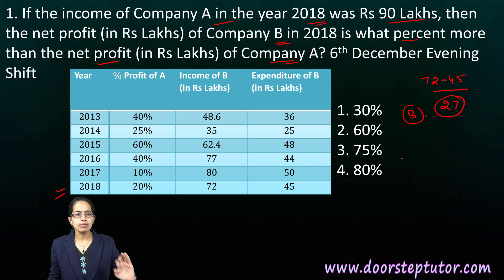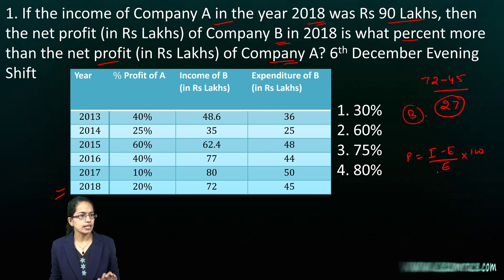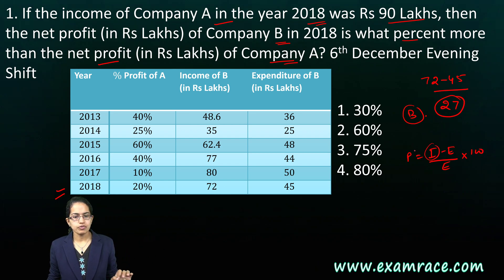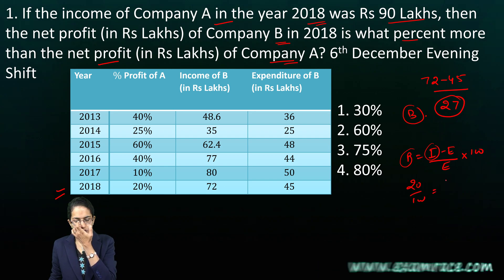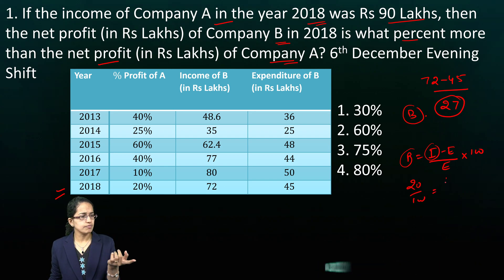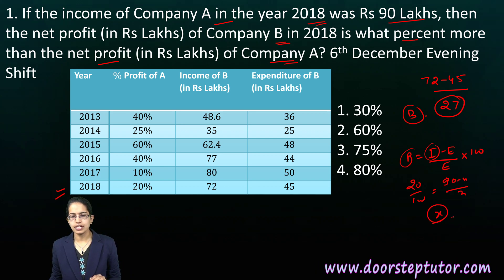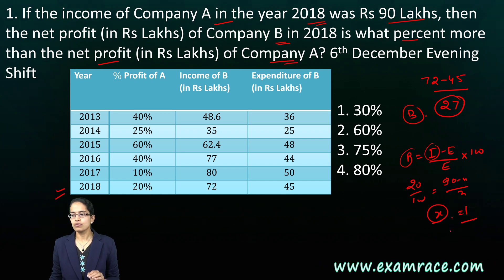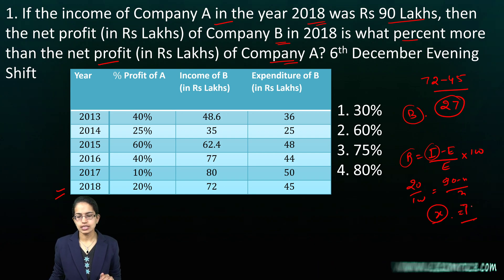For company A, profit is equal to income minus expenditure divided by expenditure into 100. We know the income is 90 lakhs and the profit percentage is 20%. So 20/100 equals (90 minus X) divided by X. We solve for X and get a certain value — let's say 75 lakhs for expenditure.